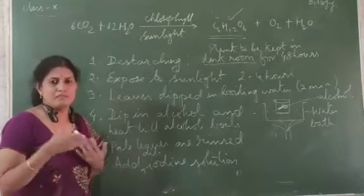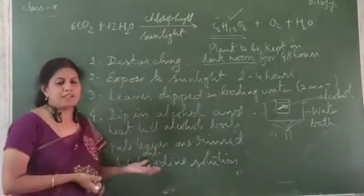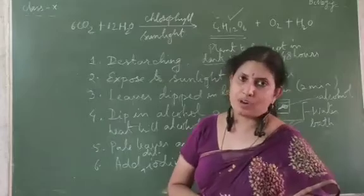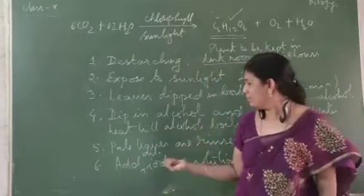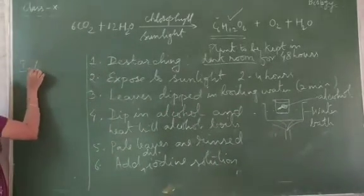These steps are common for any of the activities. It can be the activity with the variegated leaves in 6.1. So the green colored parts will show blue black color. When it is showing blue black color, the inference.